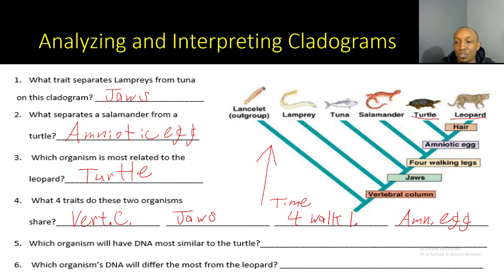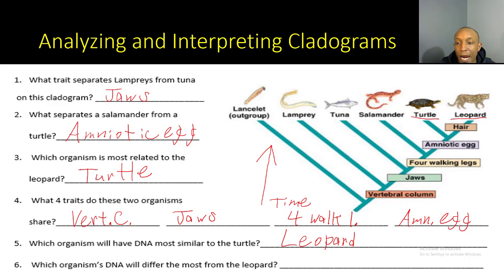Number five: which organism will have DNA most similar to the turtle? Since turtles and leopards branch off at the last branch, it would be the leopard. Number six: which organism's DNA will differ the most from the leopard? The leopard is all the way on one side, and Lancelot is all the way on the other side, so Lancelot would have the most different DNA from the leopard.